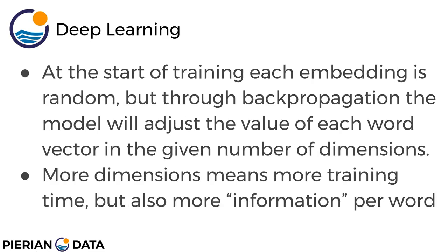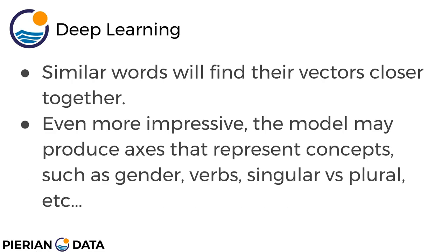At the start of training, each embedding is random, but through backpropagation the model adjusts the value of each word vector in the given number of dimensions. More dimensions means more training time, but also more information per word. Each dimension sometimes represents some sort of idea. Similar words will end up being closer together as their vectors are slowly brought closer together. The model ends up producing axes that represent concepts or ideas — there may be a dimension representing gender, another for verbs, singular versus plural, et cetera.